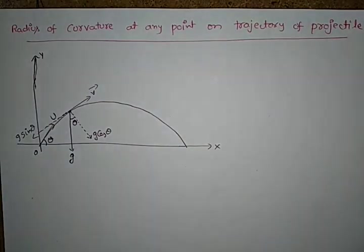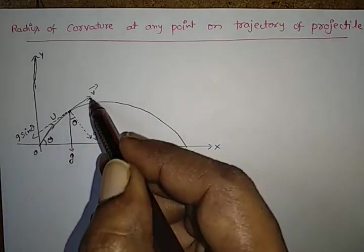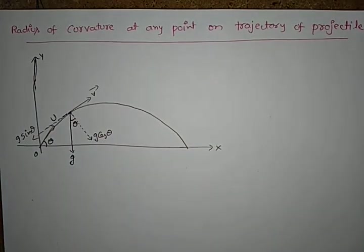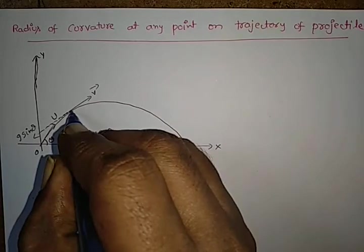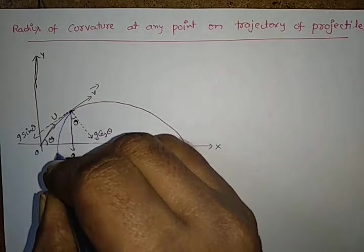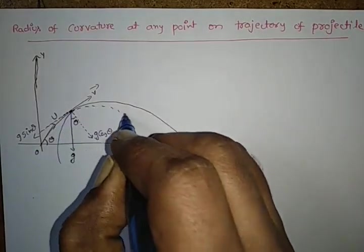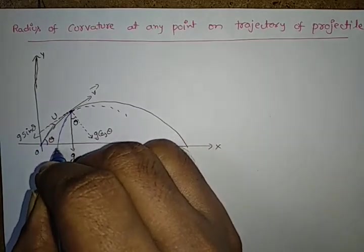Here g cos theta and v are perpendicular to each other. Now we want to measure radius of curvature at this point.